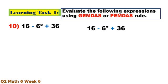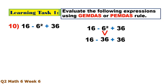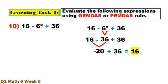Number 10. Using PEMDAS, exponent first: 6 times 6 equals 36. Then 16 minus 36 equals negative 20, and 3 plus 36 equals 16 — completing the expression.